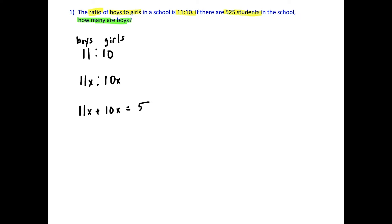And remember, there's 525 students in the school. So then we just simplify here. We get 21x equals 525.